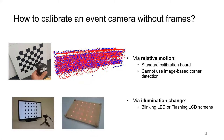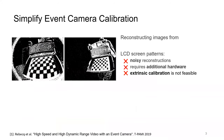Recent calibration methods rely on the usage of actively illuminated patterns such as blinking LED or electronic display devices. Reconstructing images from the LCD pattern leads to noisy images. This method requires a custom-built calibration board and extrinsic calibration between the event camera and standard camera is not feasible.